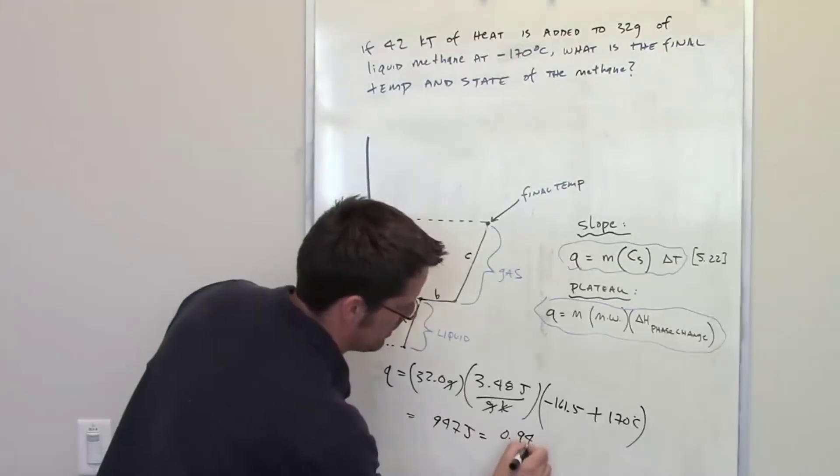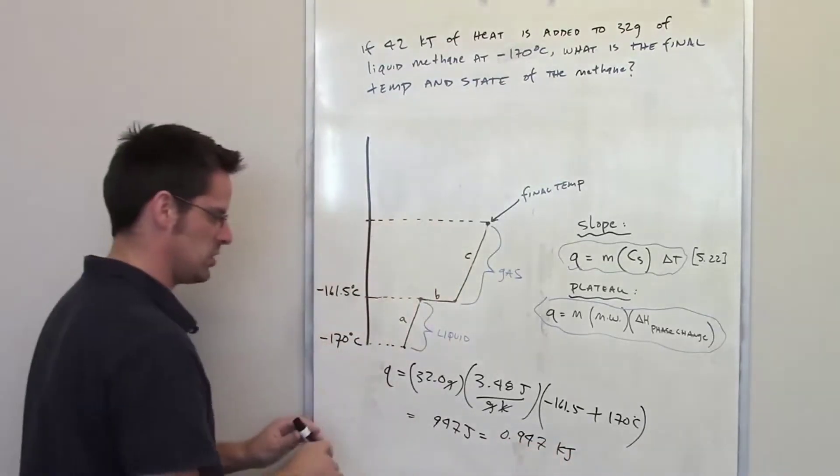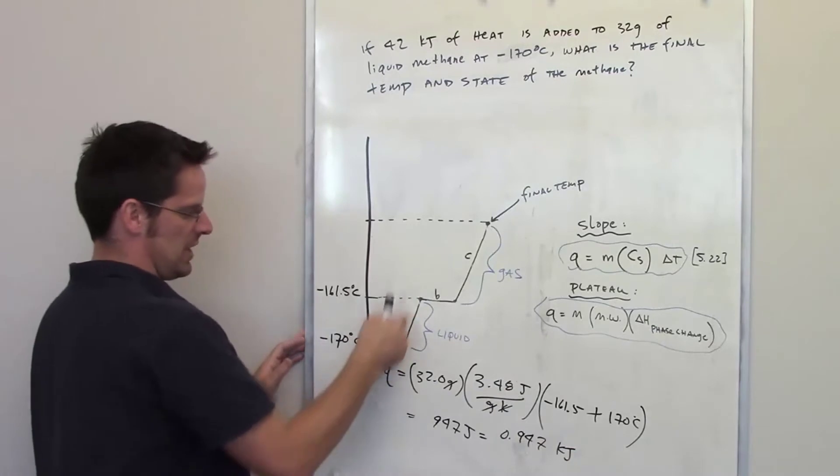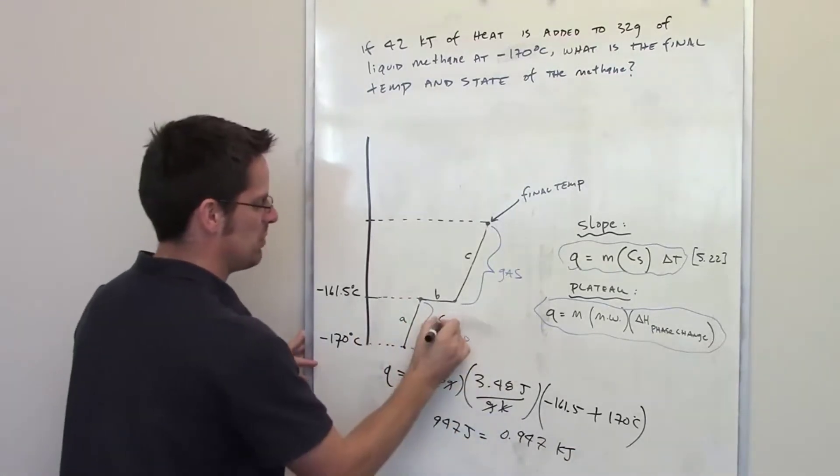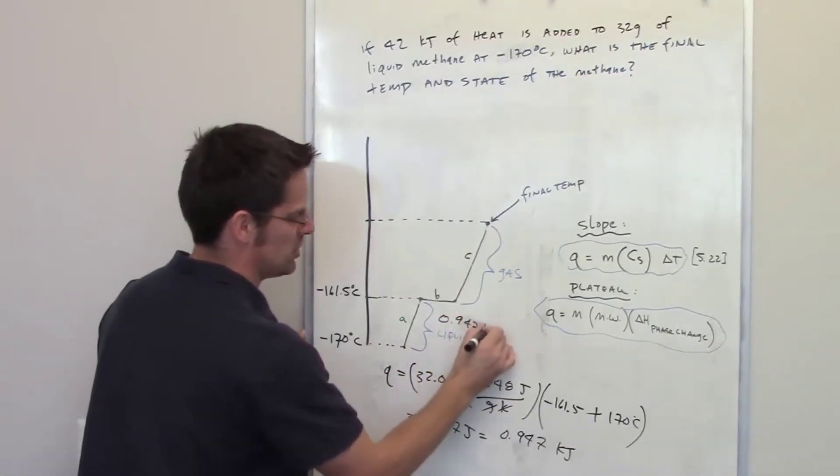If you're okay with me jumping the gun here, that's the same thing as 0.947 kilojoules. So this distance A is going to consume 0.947 kilojoules. That's the cost.